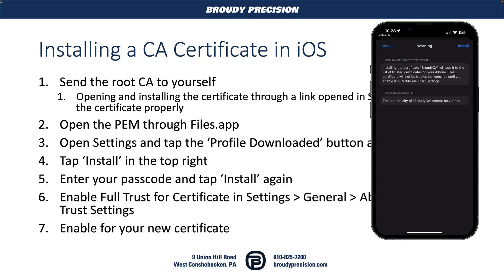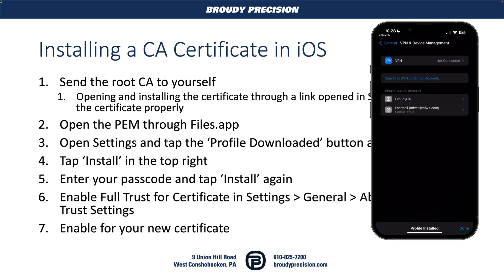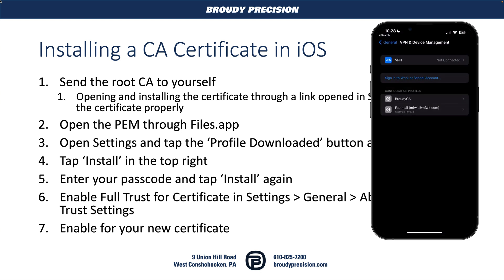It's going to confirm again that we have a root certificate being installed and that the authenticity of the certificate can't be verified. It also warns that the certificate won't actually be trusted for websites until we do an additional step — that's step number six, which we'll get to in a second. We'll hit Install and Install again. And that's it — the CA is now installed. But as mentioned, we still have to tell the phone to trust that certificate completely and allow it to be used from the browser.